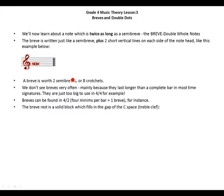The breve rest is a solid block which fills in the gap of the C space in the treble clef. If we're using a treble clef, this is C, and the rest of a breve is a block which needs to fill the C space.